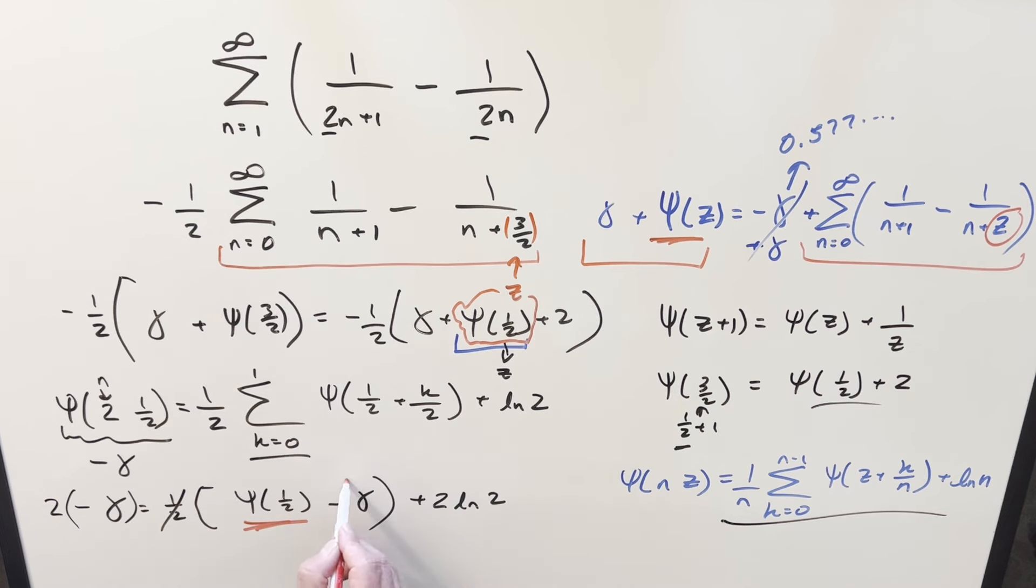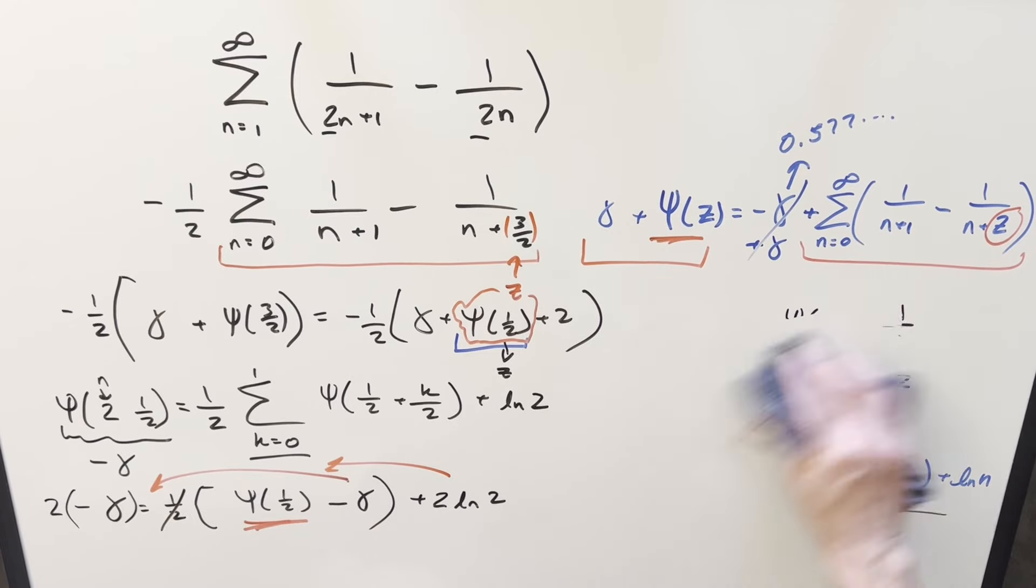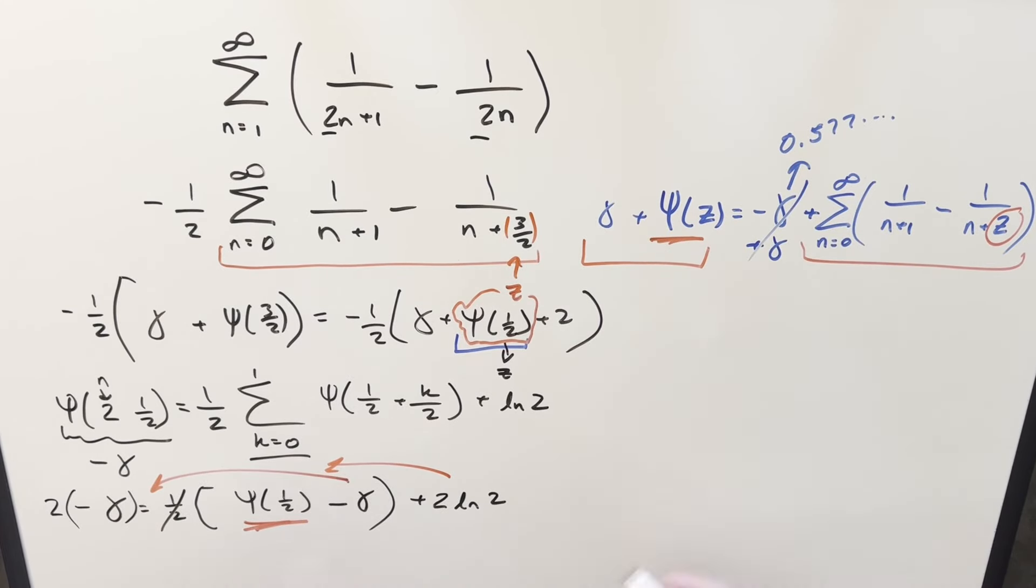So in order to isolate that, let's leave this on one side of the equation and bring everything else on the other side. Let's see how that's going to work. So when we do that on one side of the equation, we're just going to have digamma 1 half. Then we're going to have minus 2 times the Euler-Mascheroni constant. We bring this to the other side, this is going to become a plus, and then this is going to become a minus. But we can take these two and put these together. One copy of the constant minus 2 is just going to give me a minus 1 here.